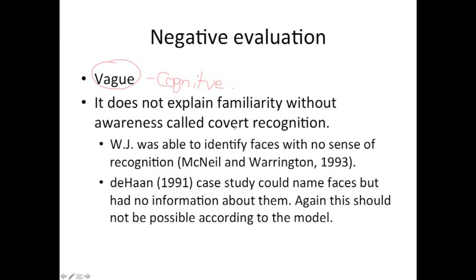For example, W.J. was able to identify faces with no sense of recognition — he could say that's a familiar face, but had no idea why. Dehan, in another case study, could name faces but had no biographical information about them. According to the model, this should not be possible, as name generation should only follow successful access to person identity nodes.